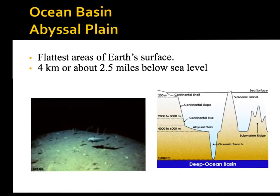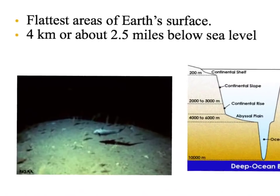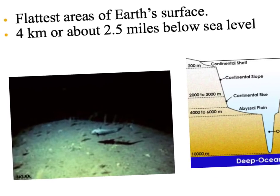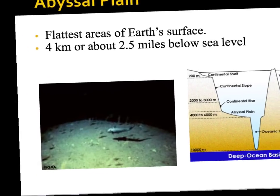The ocean basin — at the very bottom of the ocean — contains what's called the abyssal plain, which is the flattest area of Earth's surface, about two and a half miles below sea level. It's just a flat area with really not a lot going on.